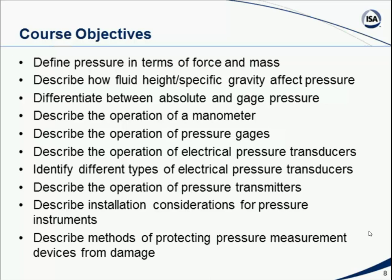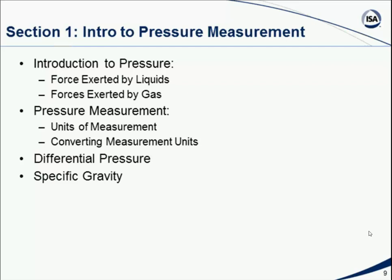Let's begin with Section 1 — an introduction to pressure measurement. We're going to discuss various aspects including pressure as it relates to liquids and the force exerted by liquid columns. We'll also discuss gas pressure and pressure measurement, including the types of units and conversion between different units — especially between English or American units and the scientific or metric type units. We're going to talk about differential pressure, which we discussed earlier in our lecture on flow measurement, and also discuss specific gravity and how it relates to pressure for both liquids and gases.